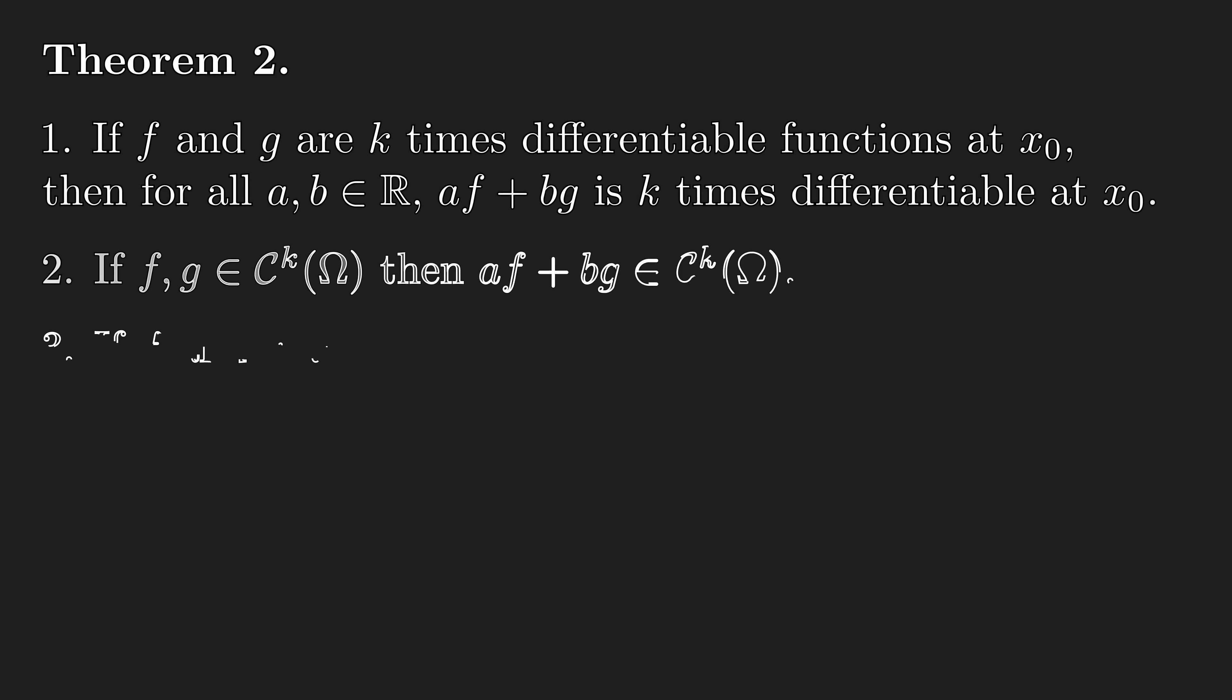The next theorem comes in three different versions as well, for each different notion of smoothness. And this theorem says that if f and g are in certain smoothness class, then so is the linear combination of f and g. Meaning we can add two functions, or multiply them by constants, and the level of smoothness is preserved.